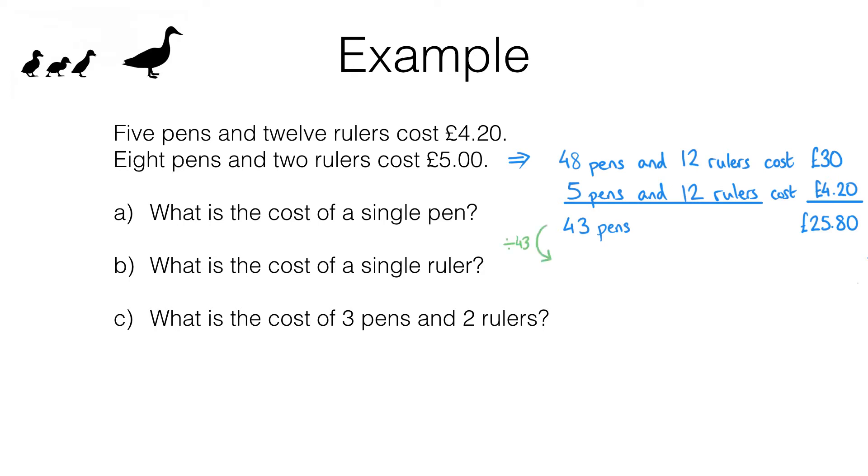Dividing by 43 I see that one pen costs 25 pounds 80 divided by 43. Now if I put that in my calculator I get 0.6, but because this is money I need two decimal places, so what we've really got is 0 pounds 60 pence which I write like this. So we've got our answer—that's the cost of a single pen.